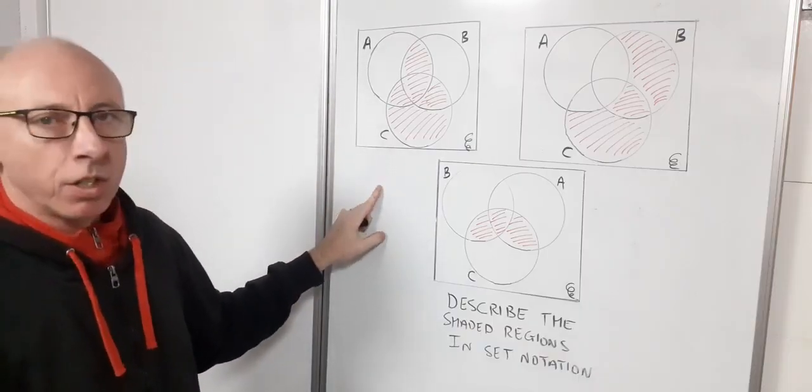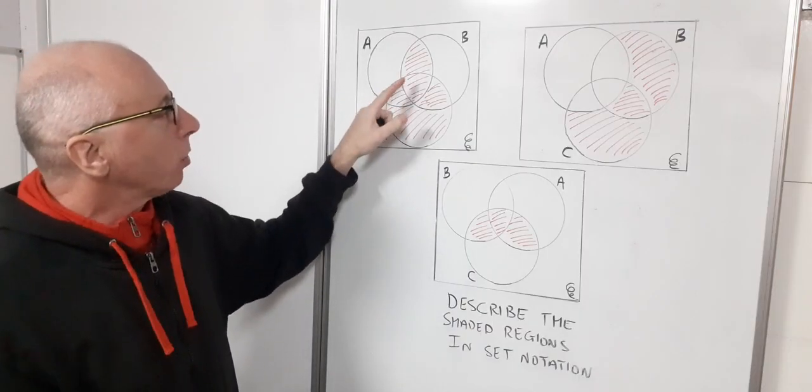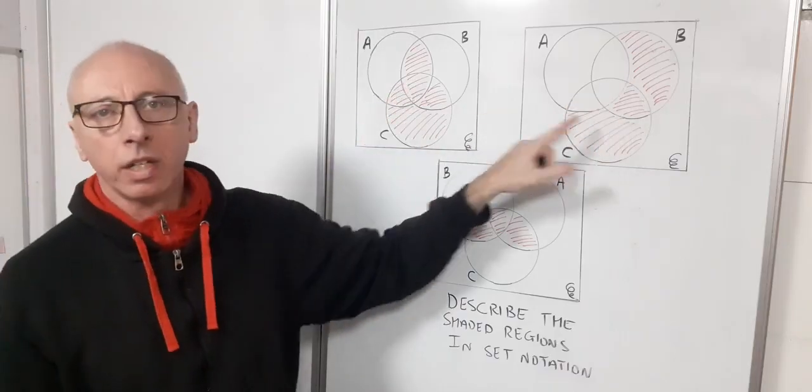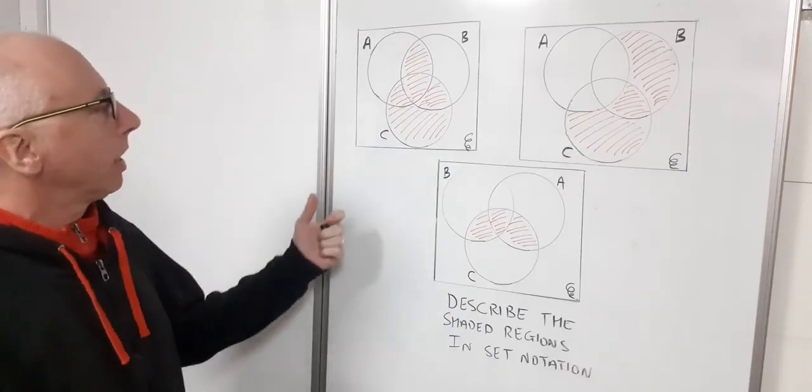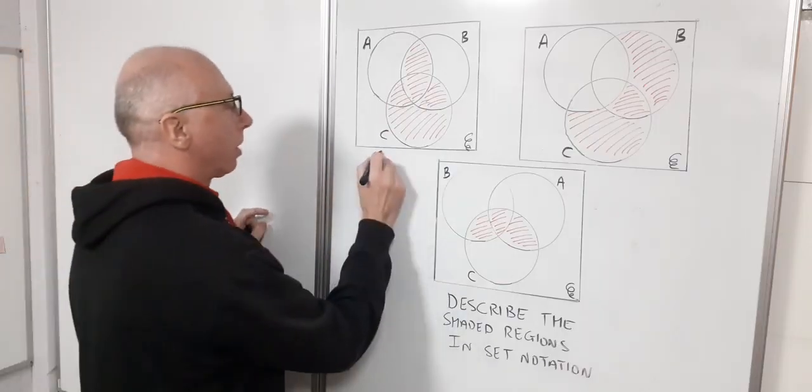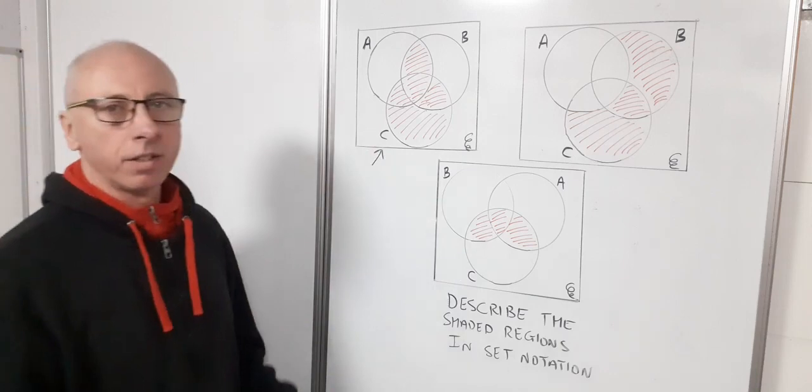What I want to try and do is write out what the shaded regions are in set notation for each of these diagrams. Let's start with this one first. What have we got here in the shaded region?